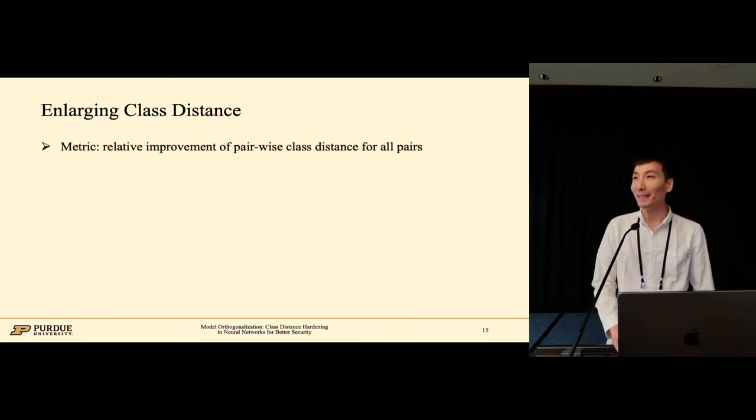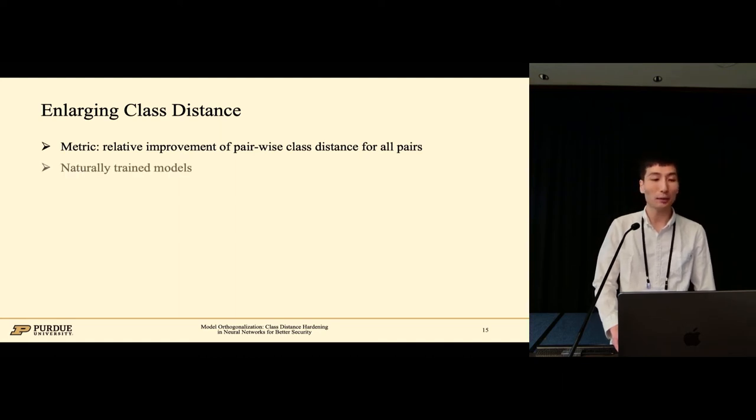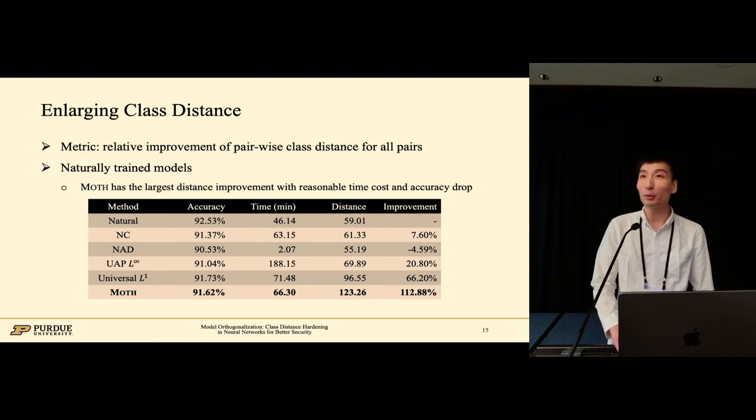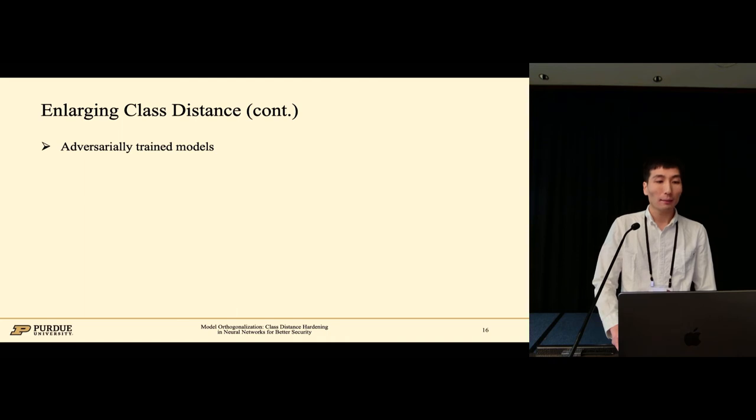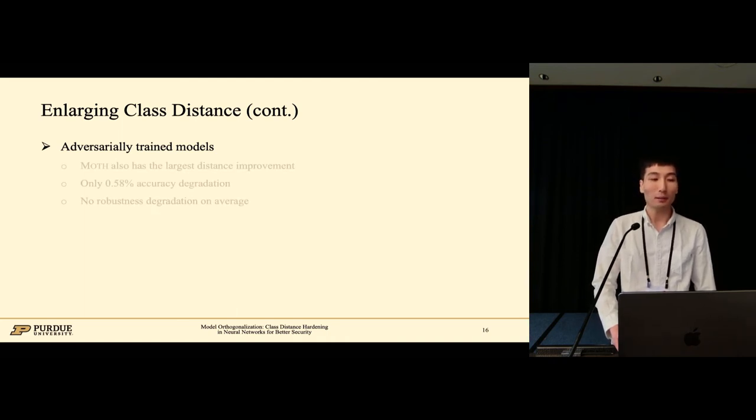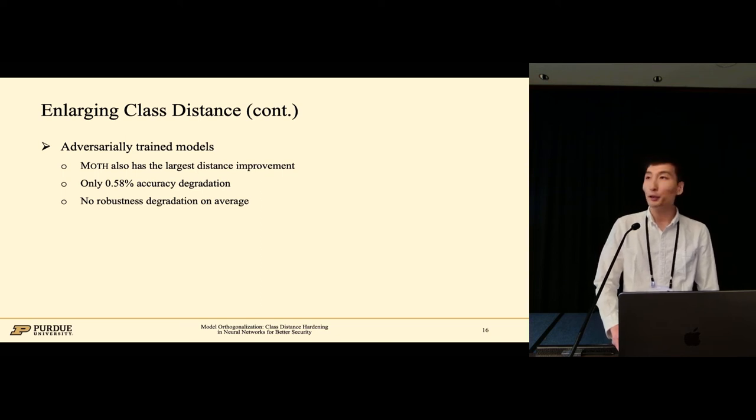The relative improvement of pairwise class distance for all pairs is used as the metric. We study naturally trained and adversarially trained models. This table shows the results for naturally trained models. The first column shows different hardening techniques, the second column the test accuracy, the third column the training time, and the fourth column the average class distance. The last column shows the relative improvement. We can see that MAUS has the largest distance improvement with reasonable time cost and accuracy drop. The observations on adversarially trained models are similar. MAUS has the largest distance improvement with limited accuracy degradation and there is no robustness drop on average.